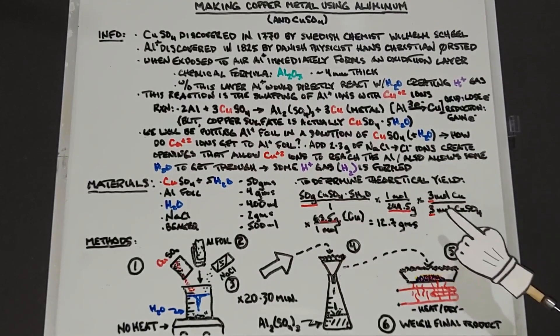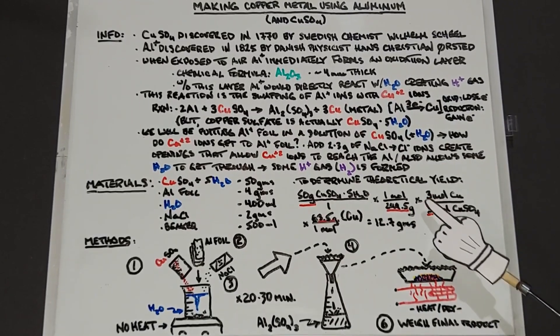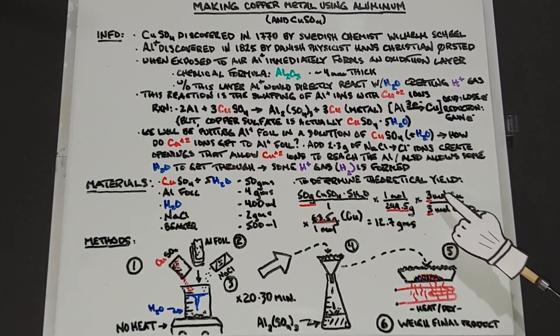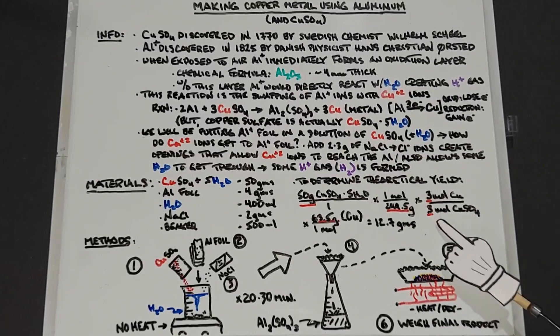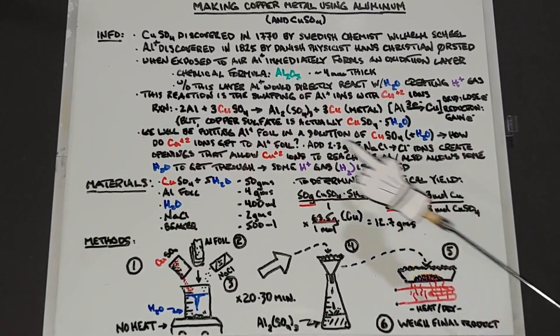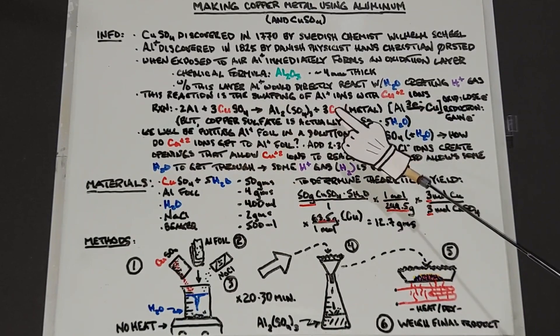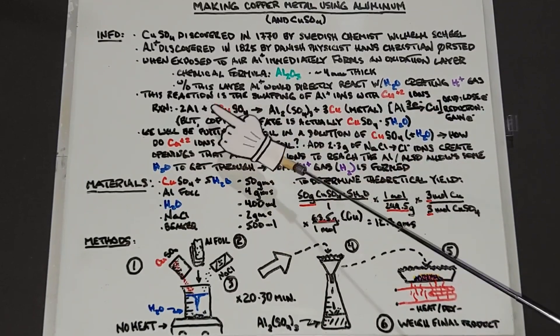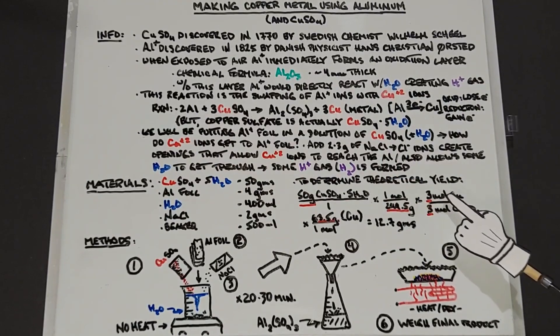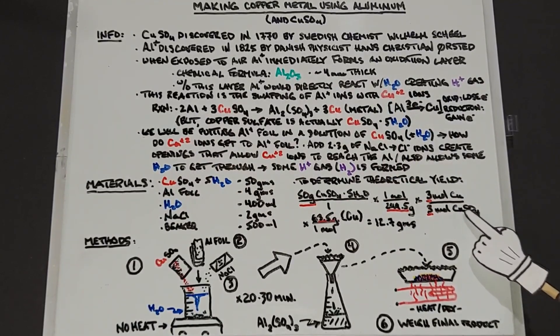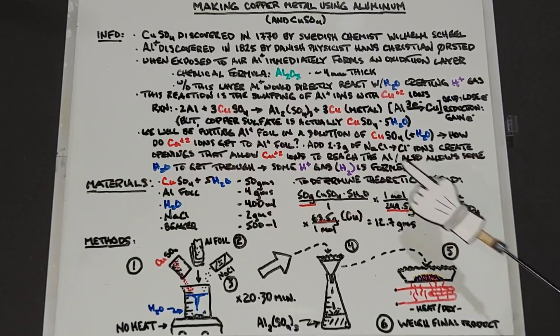The next step involves putting the amount in the number of moles of the copper product over where it's coming from, the copper sulfate. If we go back to the balanced equation, we can see we got three copper metals coming from three copper sulfates. So that's three moles of copper metal over the three moles of copper sulfate it came from.